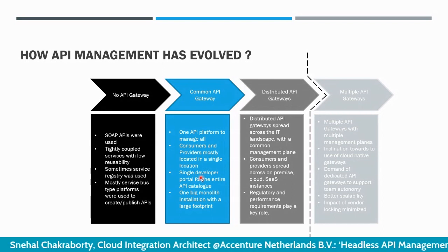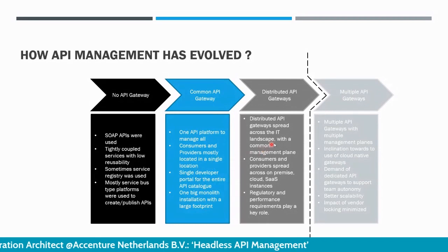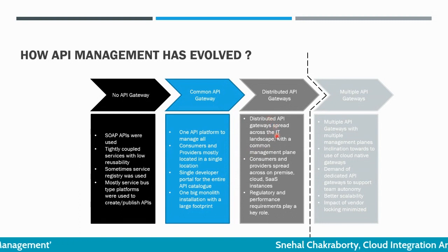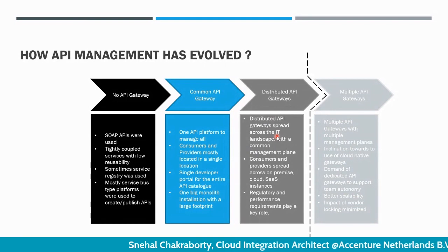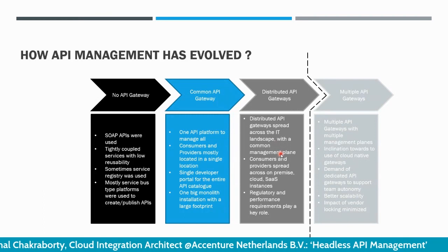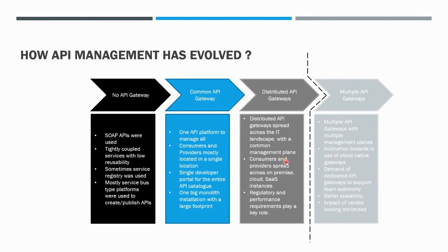This monolithic installation had a really large footprint. Slowly, in the past few years, multiple vendors have come up with distributed API gateway offerings, providing a management plane to control multiple logical API gateways that can be installed at different locations based on use cases. A new trend in the past year or so is organizations going for multiple API gateways, with the cloud journey being a major factor, along with increasing demand for team autonomy in choosing their own platforms.